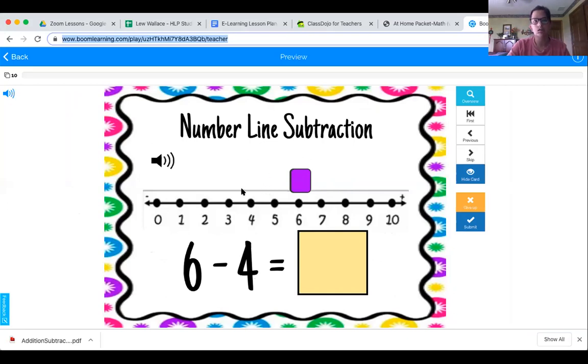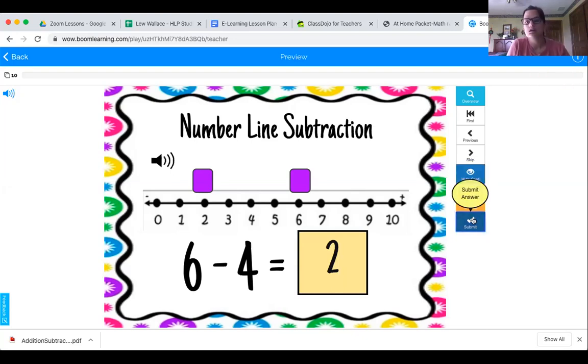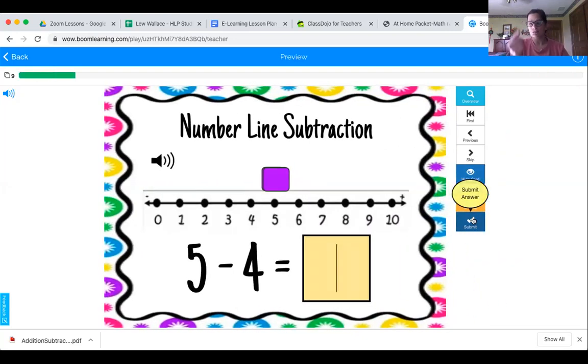One, two, three, four. So the number I end with, one, two, three, four, is two. So I'm going to write a two there, type a two, see if I'm correct. And it moved me on. And if you are at home and don't have anybody with you to help you, you can just click this and it will read the problem to you.